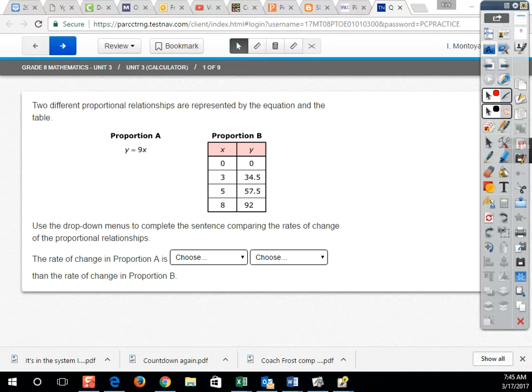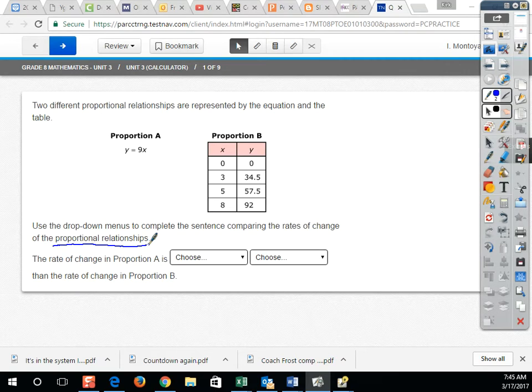Use the drop-down menus to complete the sentence comparing the rates of change of the proportional relationships. Let's talk a little vocabulary here. Proportional relationship means you have a linear relationship that starts at the origin, so it has a Y-intercept of 0, 0. The next vocabulary word, rate of change, this is just the slope. So you have a linear relationship with a Y-intercept of 0, 0, and we need to compare the slopes.